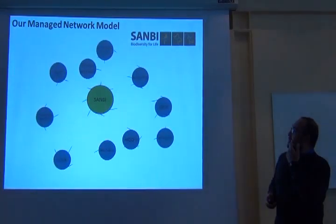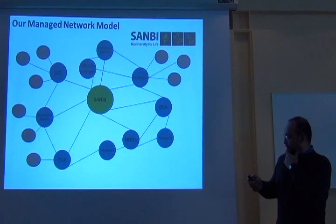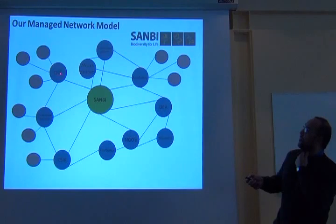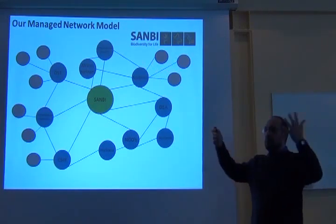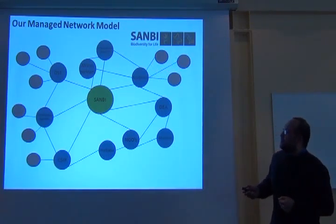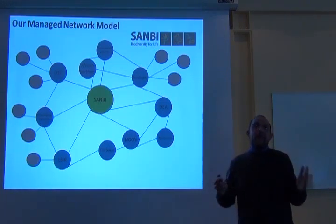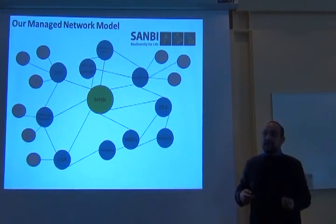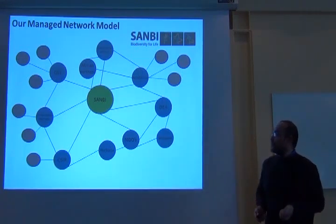Our managed network model requires identifying who our partners are. We've got partners such as the Department of Science and Technology, and we need to look at our strategic partners and allow their partnerships to grow. SANBI cannot manage and collect all that information by itself — it doesn't have the resources. But what it does have, in terms of the Biodiversity Act, is the mandate to set the agenda, set the vision, and galvanise partners around a common cause.